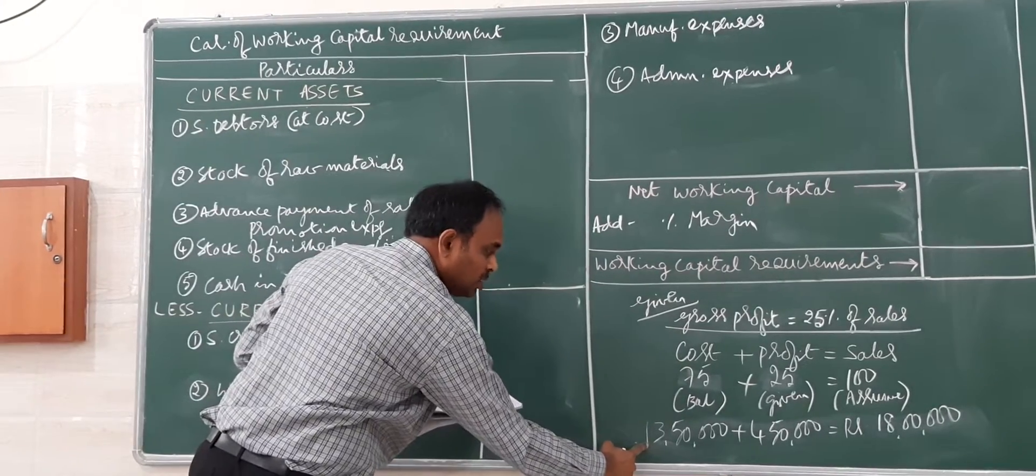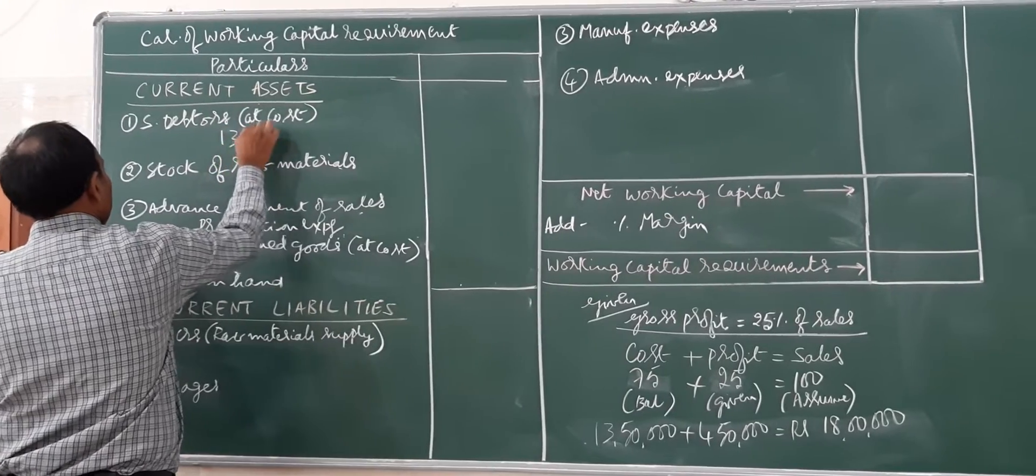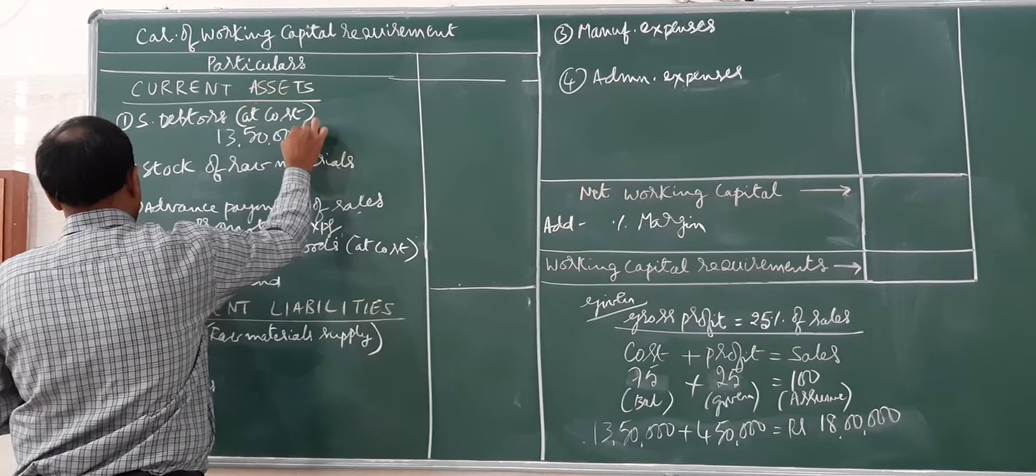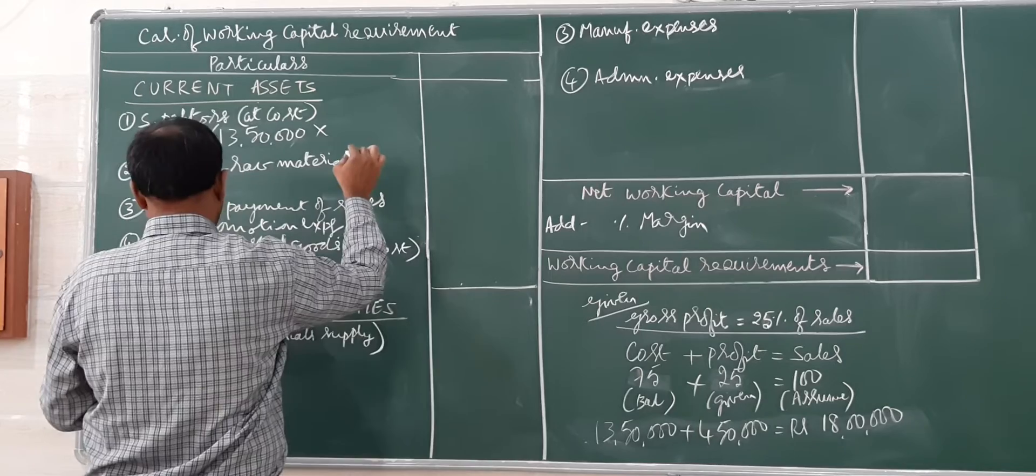We are able to calculate the cost, which is 13 lakh 50,000. So 50,000 into 2 months credit equals 2,25,000.